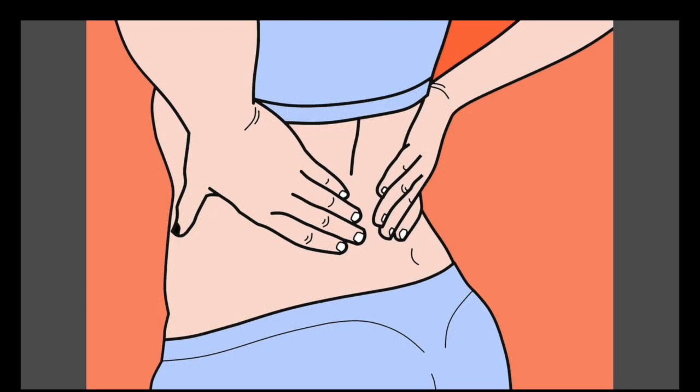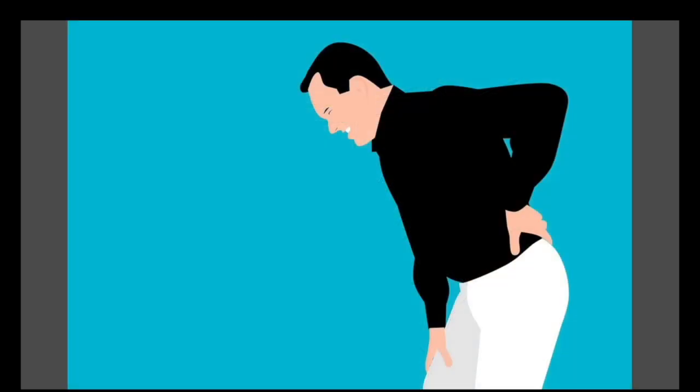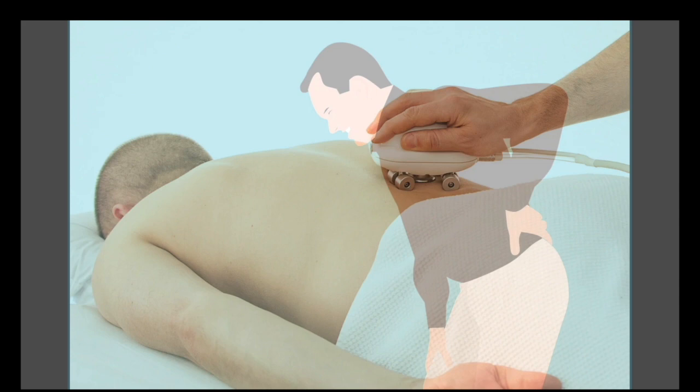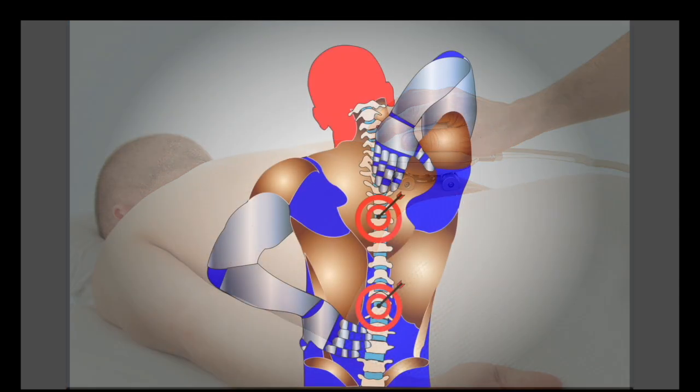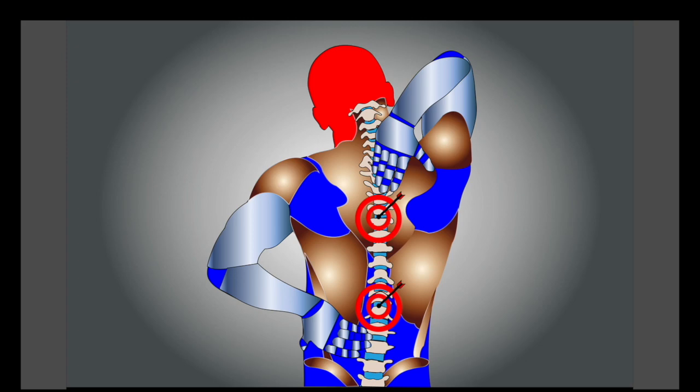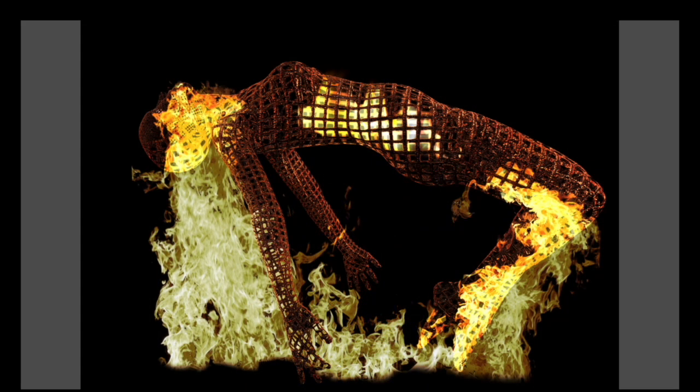Each disc has a firm outside called the annulus fibrosis and soft material inside called the nucleus pulposus. A slipped disc involves fragments of the nucleus pushing through a weakness or tear in the outside of the disc, which then presses on nerves.